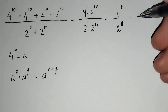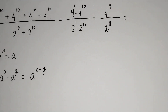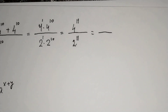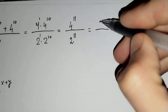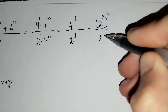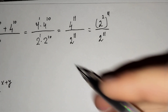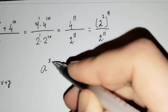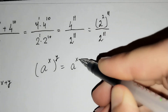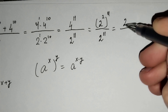And you know that 4 equals 2 power 2, so we get 2 power 2 raised to power 11, over 2 power 11. And you know that a power x power y equals a power x times y.